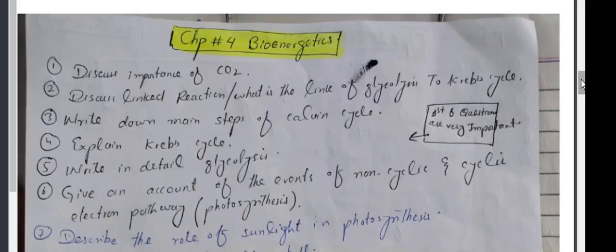Discuss importance of carbon dioxide. Discuss length reaction. What is the length of glycolysis to Krebs cycle? Write down main steps of Calvin cycle. Explain Krebs cycle. Write in detail glycolysis.